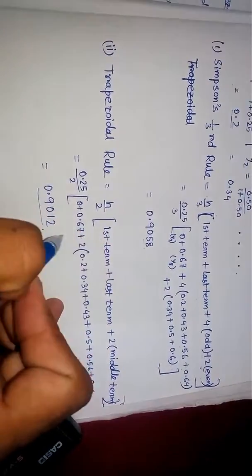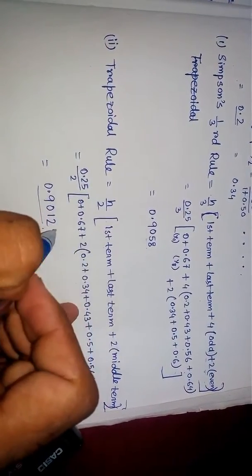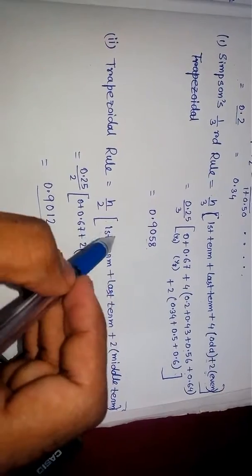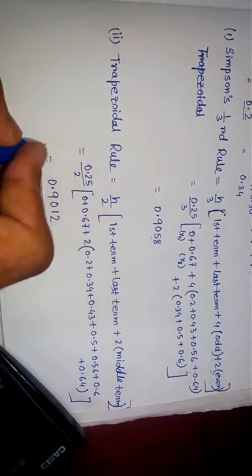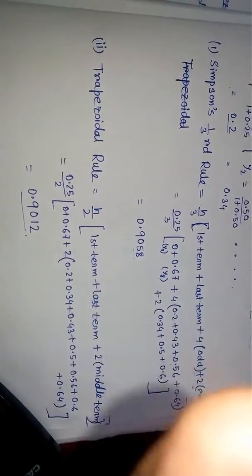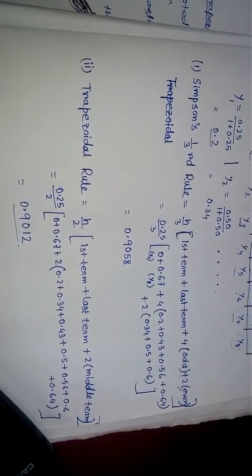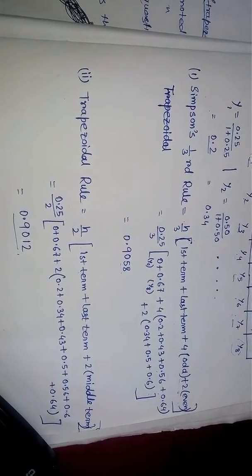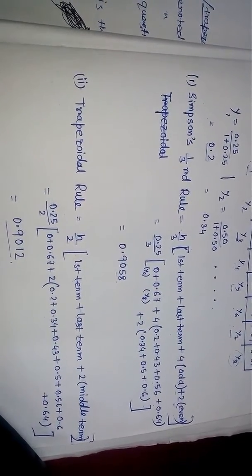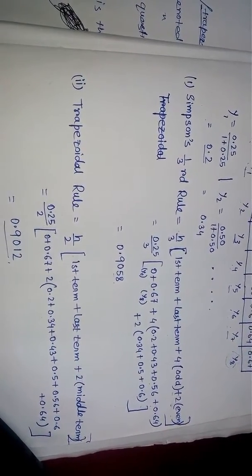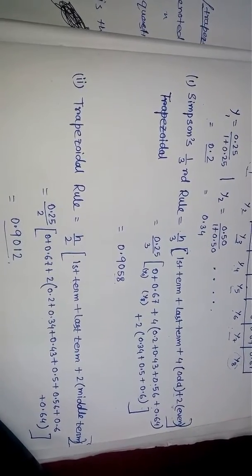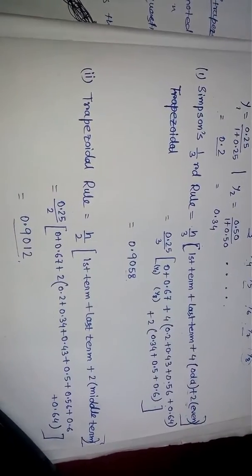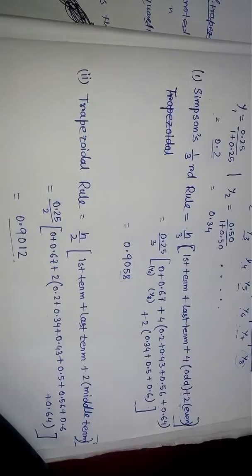You can see, friends, that these two answers are very close - they are approximate. Simpson's 1/3 rule is the modified version of trapezoidal rule to get a more exact answer. Thank you, friends, for watching my video. Please subscribe and like.